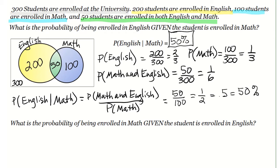So if a student is enrolled in math, there is a 50% probability they will also be enrolled in English. The probability of being enrolled in English given the student is enrolled in math is 50%. Now let's reverse those conditions and find the probability of being enrolled in math given the student is enrolled in English.